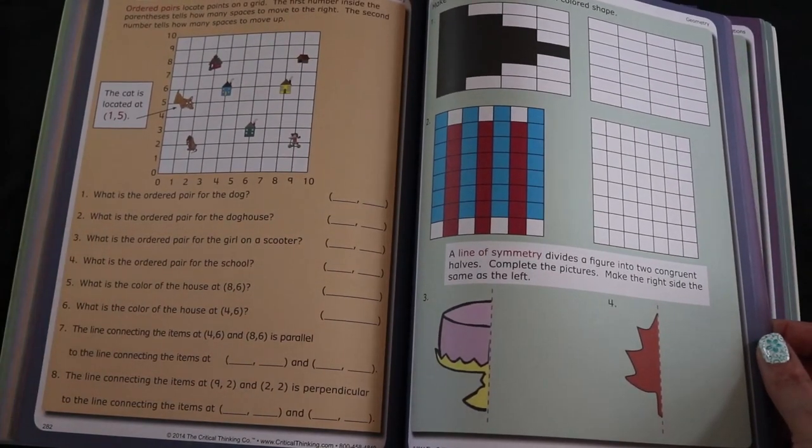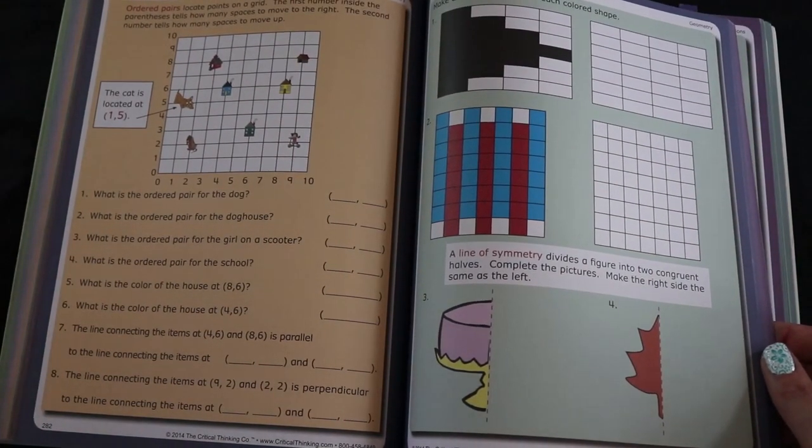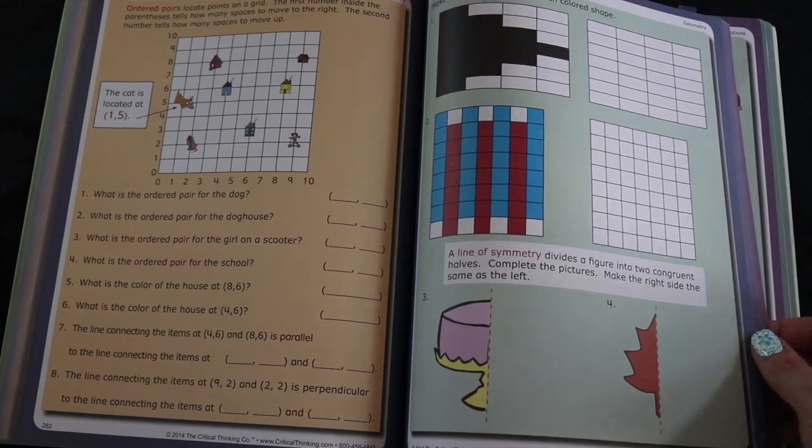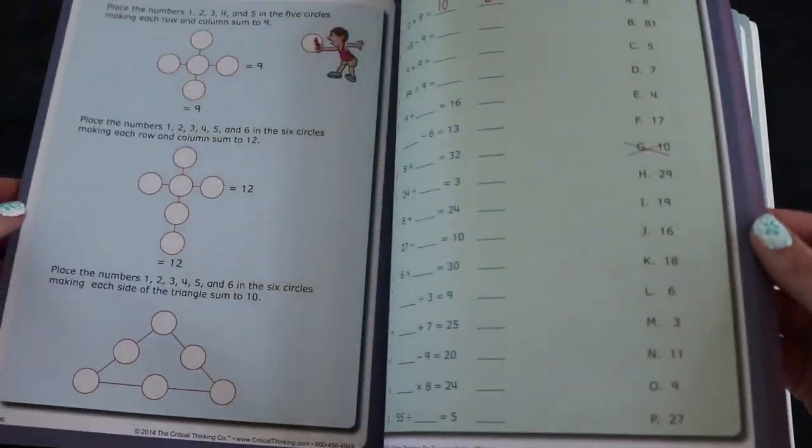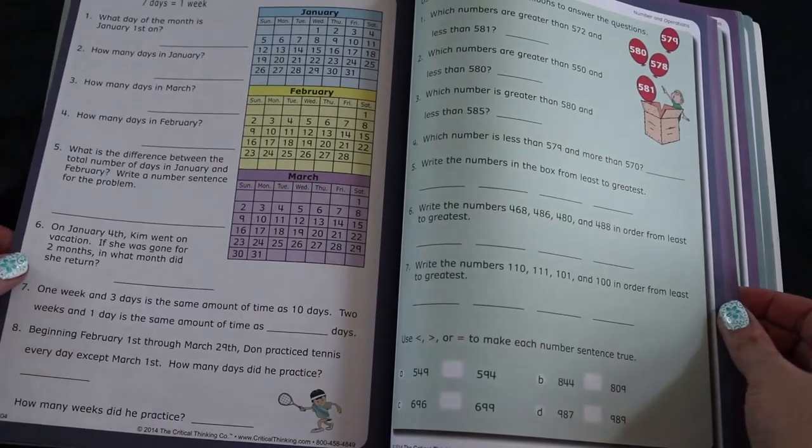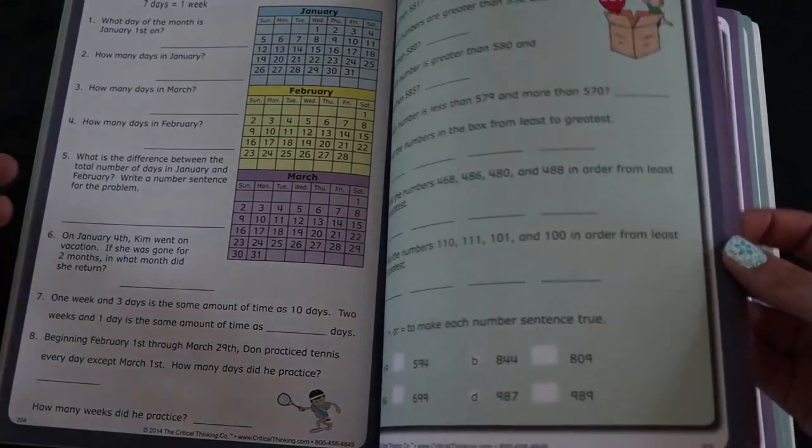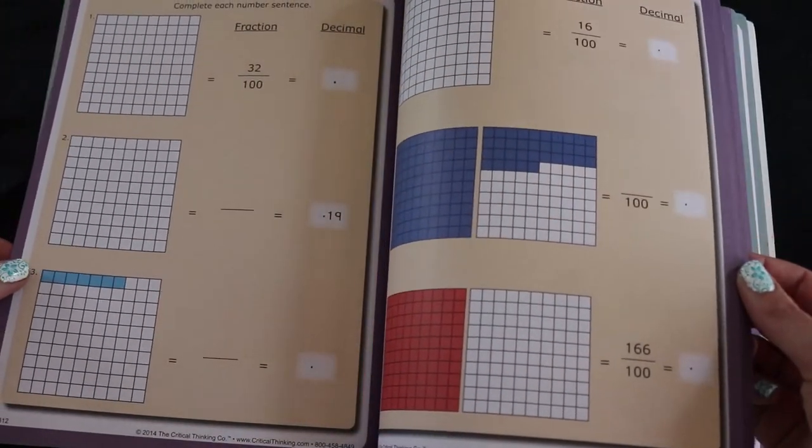There's so many topics in a clear understanding way for the kids. It's not overwhelming. Like I said, we only do two pages a day right now. But you can do more, you can do less. However you want to do it.